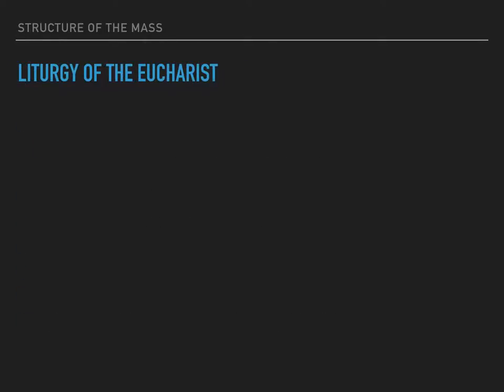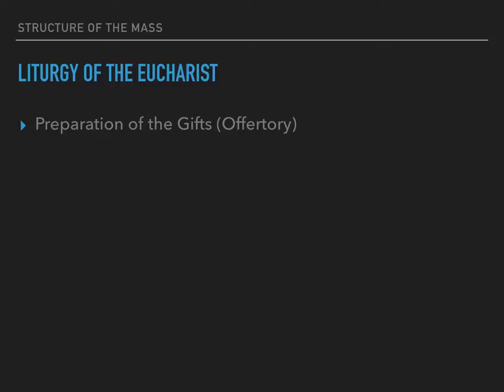Then we come to the next main part — the most important part of the Mass — called the Liturgy of the Eucharist. It begins with a preparation of the gifts, or what some people would call in older times the Offertory. The gifts of bread and wine are brought forward, and often gifts of money are brought forward as well, representing what the people offer for the well-being of the entire church. After that, we begin the Great Eucharistic Prayer, which forms the central part of the Eucharist — sometimes called the Canon, a Latin term meaning 'the law.' The word 'Eucharist' means Thanksgiving, so it is a great prayer of Thanksgiving.